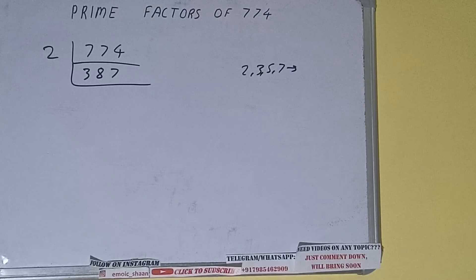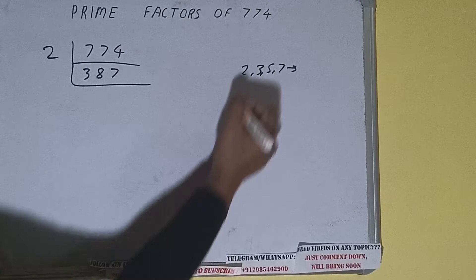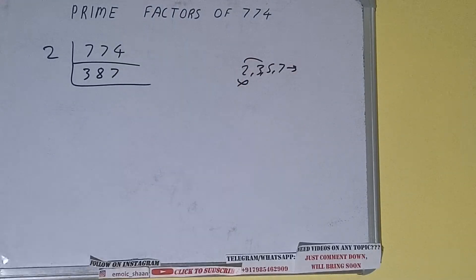Now is this 387 further divisible by 2? The answer is no, because the number is odd. So we'll check with the next lowest prime number, that is 3. Is the number 387 divisible by 3? Let's check.